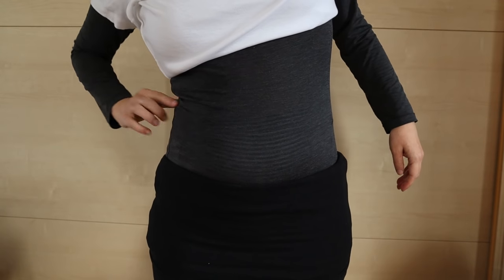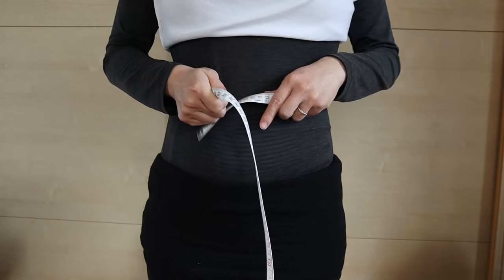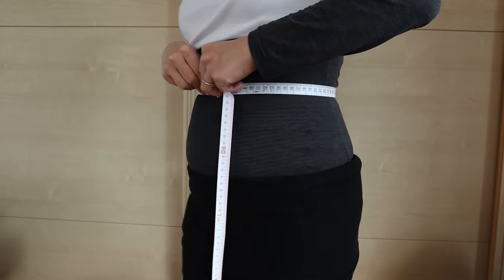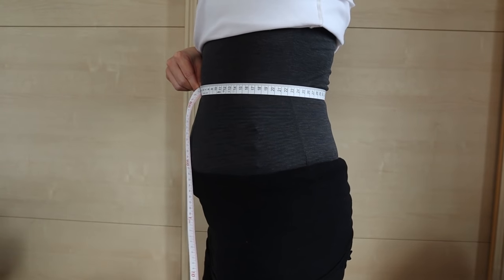This pattern is very easy to make. First take these two measurements on your body. Waistline. This is the circumference of your waistline. You can measure this where you get a crease when you bend sideways. Or if your baby bump is big and you want to wear it higher, measure the circumference at the top of your belly.